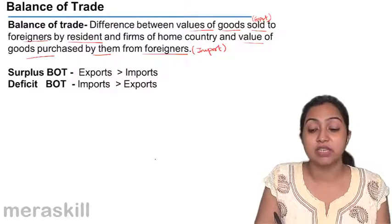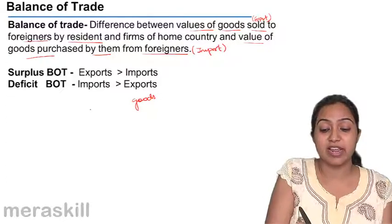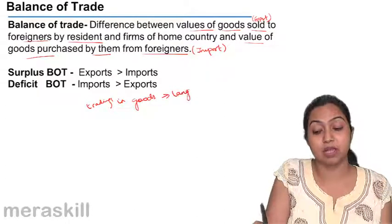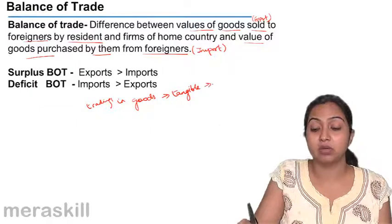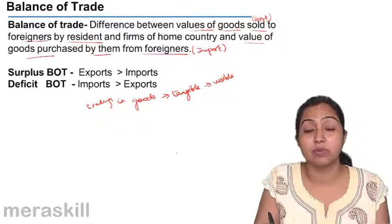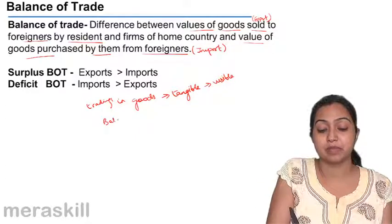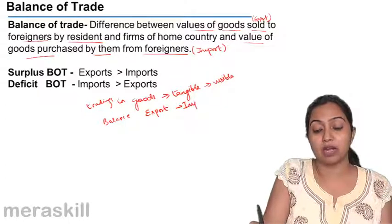Under balance of trade, we take into consideration only goods — we are talking about trading in goods. Goods that are tangible, that can be measured, that can be seen, or in other words, visible. So balance of trade is a visible trade. Balance of trade means the difference between export of a country and import of a country.